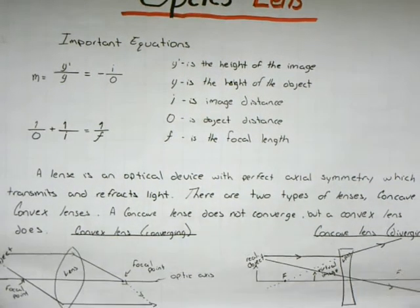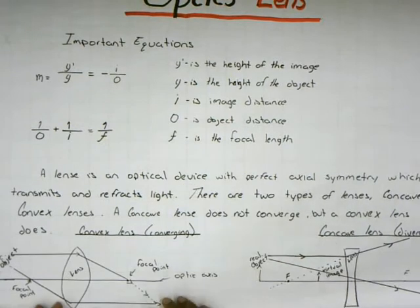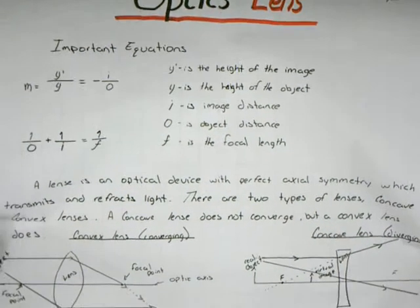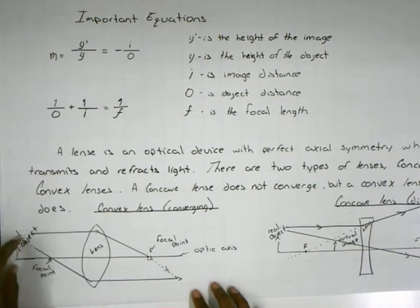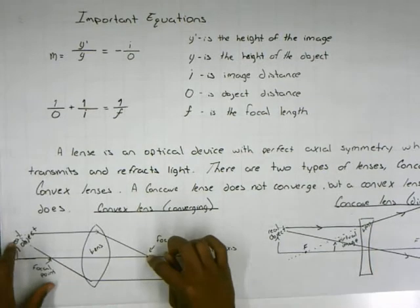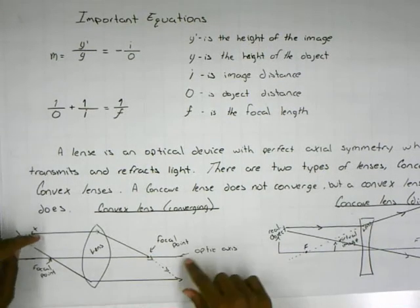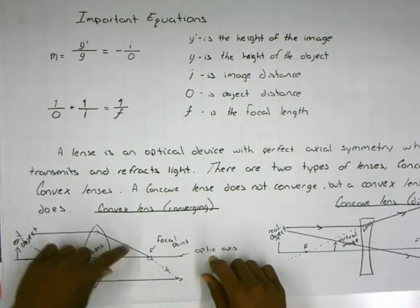For a convex lens, the real object, say there's a ball over here. Here's your lens and this is your focal point. The ray parallel to the optic axis goes all the way down to the focal point, keeps going on to the other line.